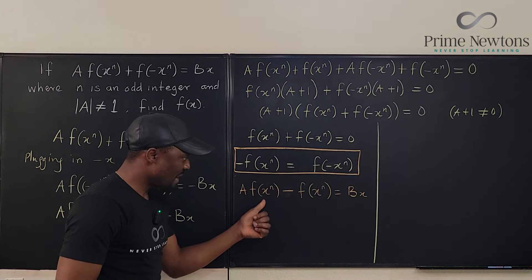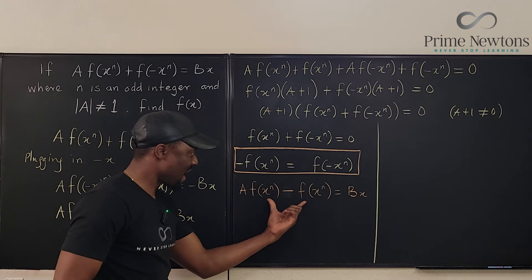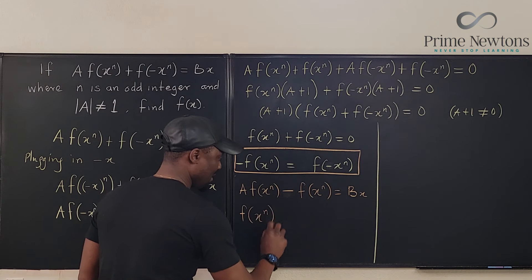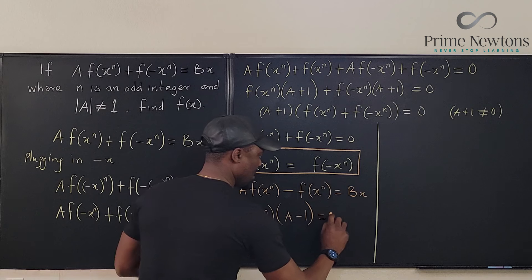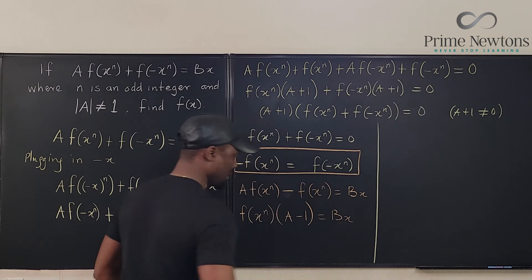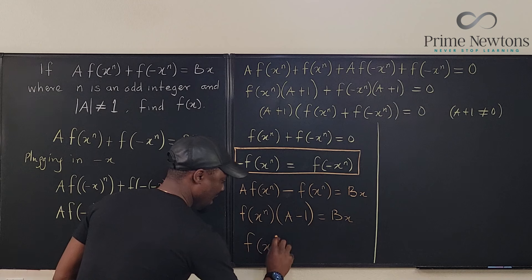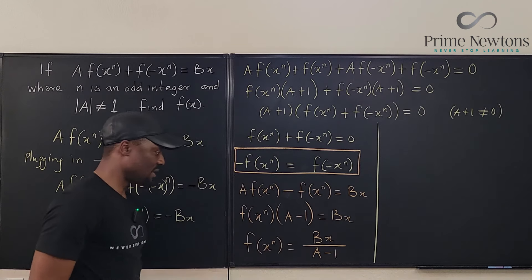So what do I get here? Remember, I'm looking for f(x), almost there. I can factor this out so that I have f(x)^n times A minus 1 equals bx. So that f(x)^n equals b times x divided by A minus 1.